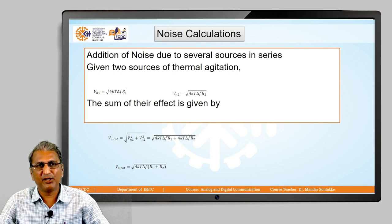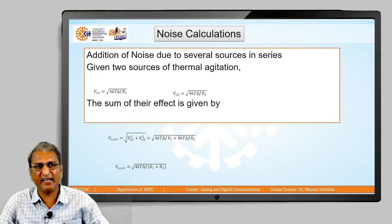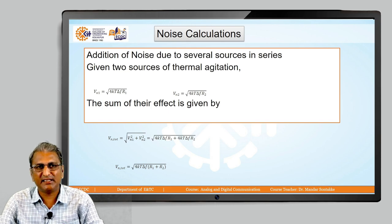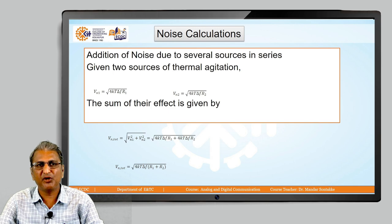Vn1 is the first voltage source, Vn2 is the second voltage source. Vn1 is given by the formula square root of 4kTΔf times r1. Why r1? Because this noise voltage is produced due to resistor r1. The second voltage source is Vn2, which is given by the formula square root of 4kTΔf times r2.